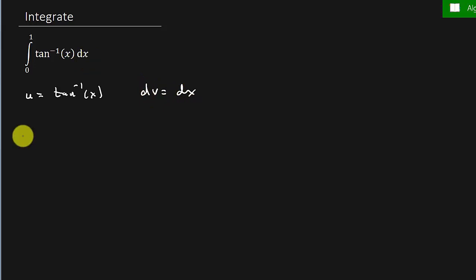So we get du is equal to 1 over 1 plus x squared dx. The derivative of inverse tangent is 1 over 1 plus x squared. That should be in your table of integrals, your formulas. And then we get v equals x.